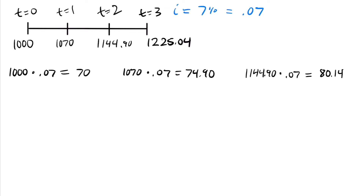So we found how much we have at the end of three years, but that took a while and was quite lengthy. We don't want to do that every time — especially if I wanted to know how much I'd have after 10, 20, or 100 years. Doing this 100 times doesn't seem like fun. So we want to find a way to streamline this, make it faster, and generalize it. Let's see what we can learn from this process and find a simple equation to calculate compound interest.